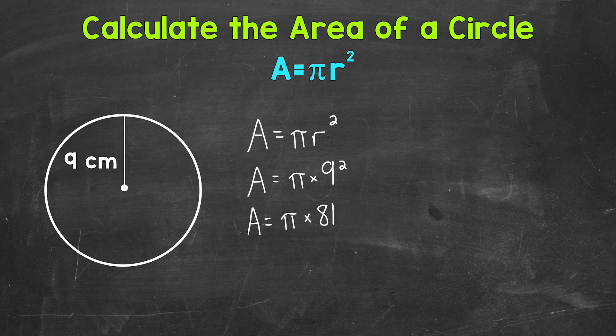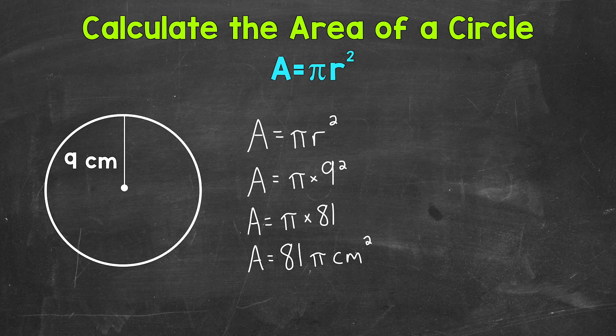Now we can rewrite this as area equals 81 pi. One way to write the area of a circle is to write it in terms of pi. Meaning we can write our number in front of the pi symbol and put our unit of measure, which is centimeters. And when working with area, it's going to be square units. So we have area equals 81 pi square centimeters.